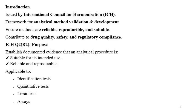Whenever you are developing a method, you should know ICH Q14. Whenever you are validating a method, you should know ICH Q2. The purpose of ICH Q2 is to establish documented evidence that an analytical procedure is suitable for its intended use and that it is reliable and reproducible.